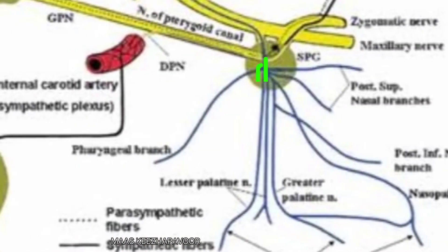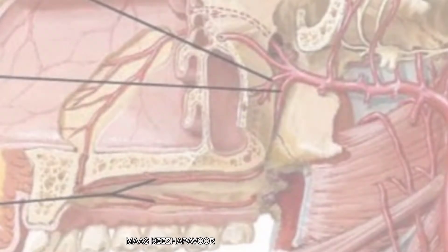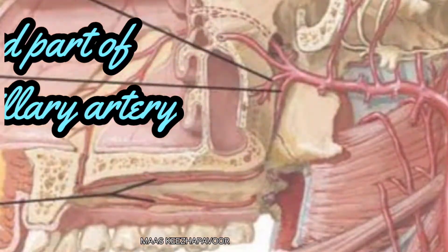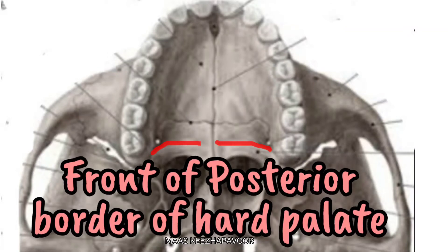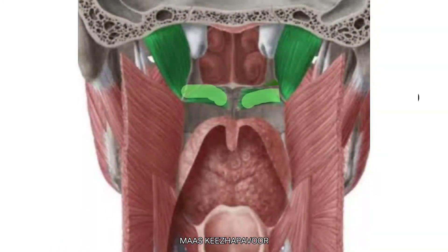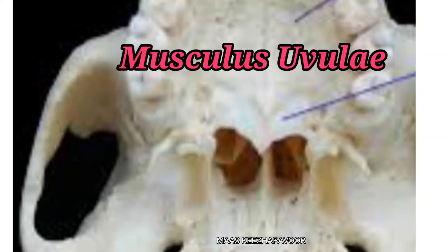The greater and lesser palatine nerves arise from the pterygopalatine ganglion. The greater and lesser palatine arteries arise from the third part of the maxillary artery. The horizontal plate of palatine bone shows a crest called the palatine crest immediately in front of the posterior border of the hard palate, which gives attachment to the palatine aponeurosis. The posterior border of the hard palate shows a conical bony projection called the posterior nasal spine, which gives origin to the muscle musculus uvulae.